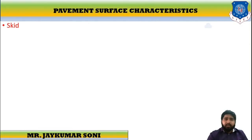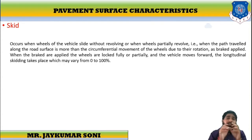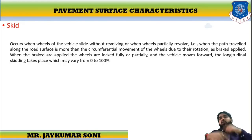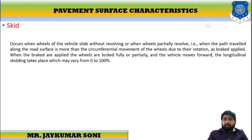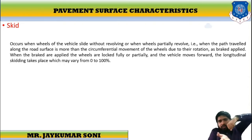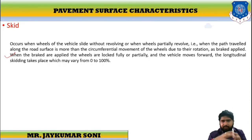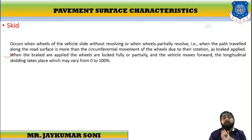Skidding occurs when the wheels of the vehicle slide without revolving. The wheels are locked so they will not revolve, but the vehicle will travel in the longitudinal direction. When the path travelled along the road surface is more than the circumferential movement — the circumferential movement is zero because the wheels are locked — but the vehicle travels in the longitudinal direction. When the brakes are applied, the wheels are locked fully or partially and the vehicle moves forward. This phenomenon is called skidding and can vary from 0 to 100%.